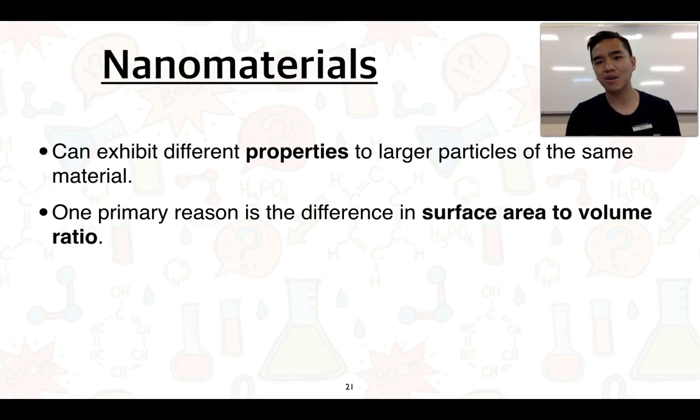One of the unique things about nanomaterials is that they can often exhibit properties that are quite different to larger particles of the same material. In other words, if you're looking at one material and then manipulating it so that you've got a very, very small amount on the nanoscale.